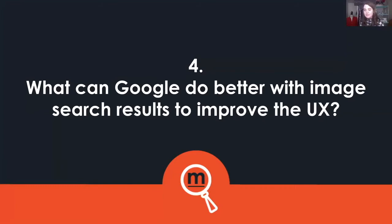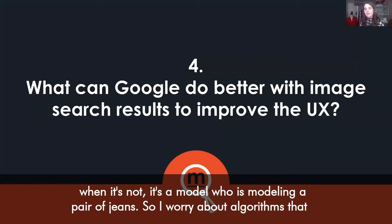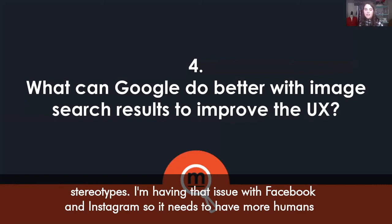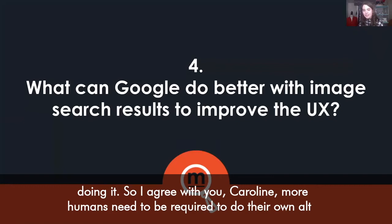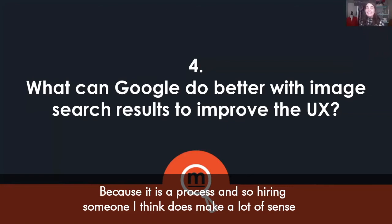I worry because these algorithms perpetuate stereotypes. They'll see an image of someone utilizing a wheelchair and deem it as 'medical' when it's actually a model modeling a pair of jeans. These algorithms are programmed in ways that perpetuate false narratives and stereotypes — I'm having that issue with Facebook and Instagram. More humans need to be required to do their own alt text. I'd even say businesses should hire Scribely, because doing alt text right is a process and not terribly easy.